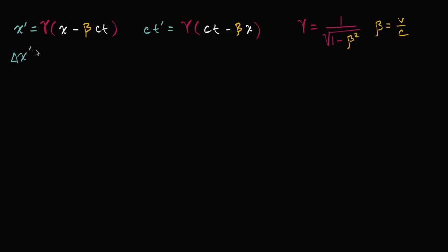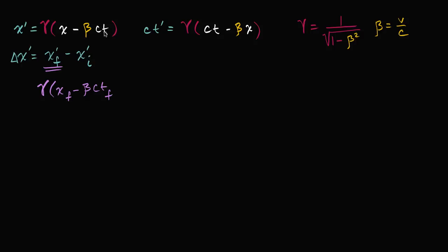Change in x prime is going to be x prime final minus x prime initial. X prime final is going to be gamma times x final minus beta times ct final. All I did is I used this formula up here — if I want to figure out my final x prime, I just think of my final x and my final ct.